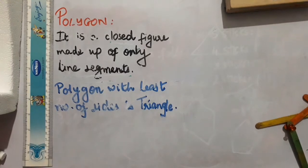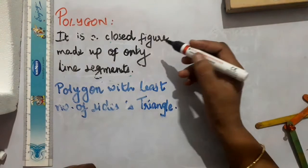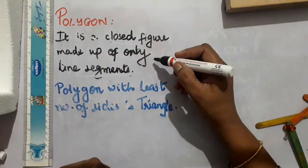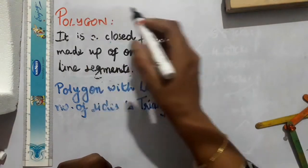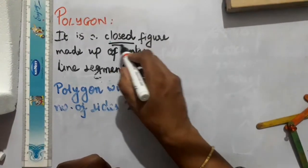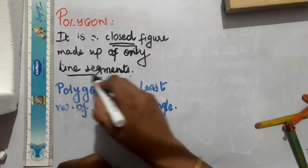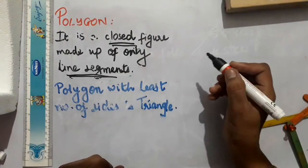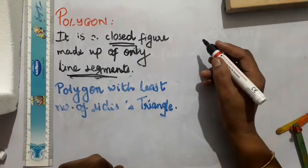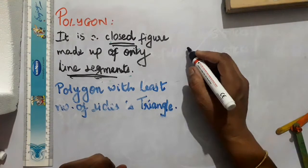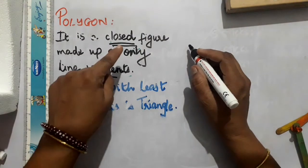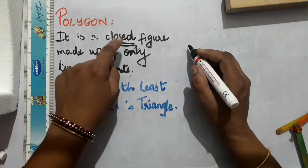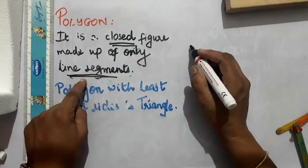Let's see about a polygon. What is a polygon? It is a closed figure made up of only line segments. The important keywords for a polygon are: it should be a closed figure and it should be made up of only line segments.